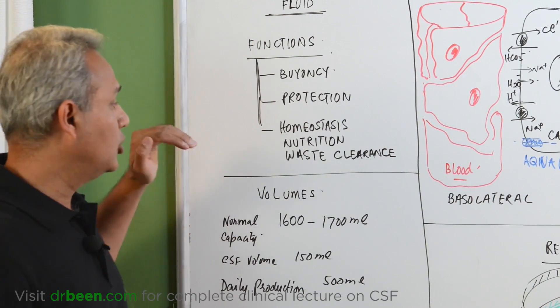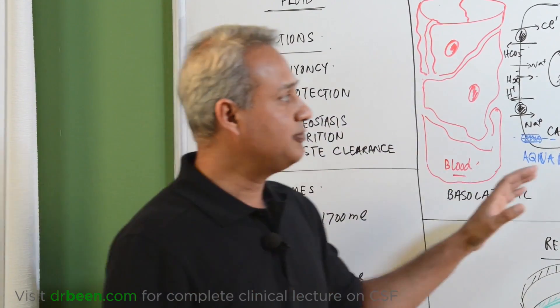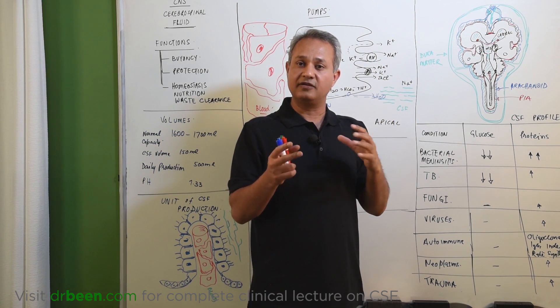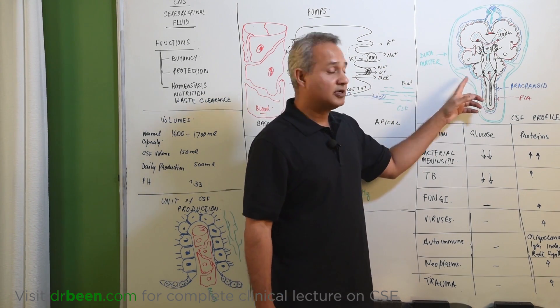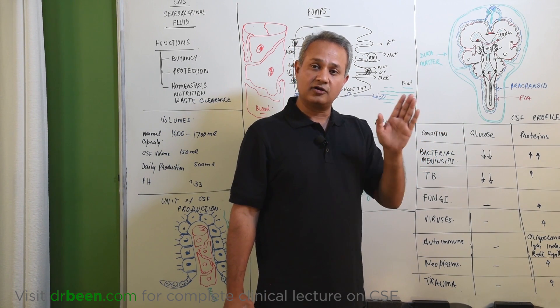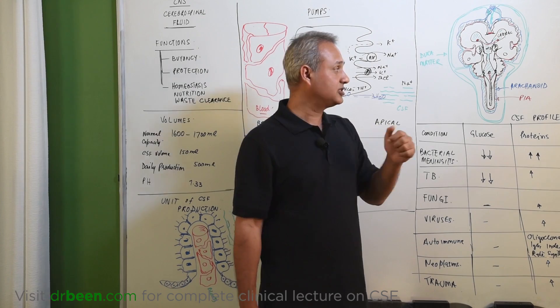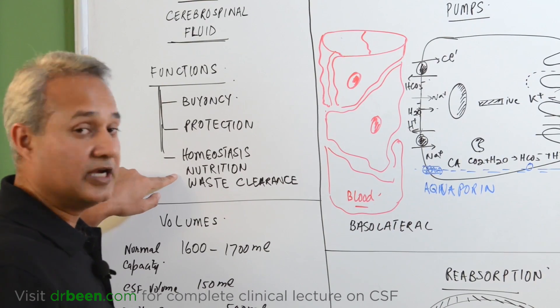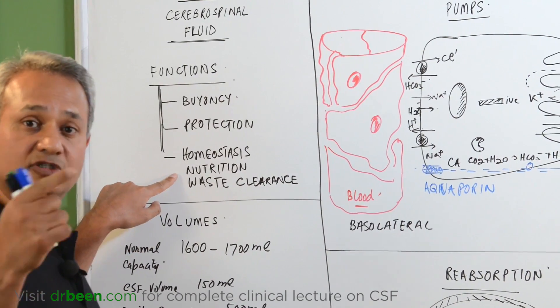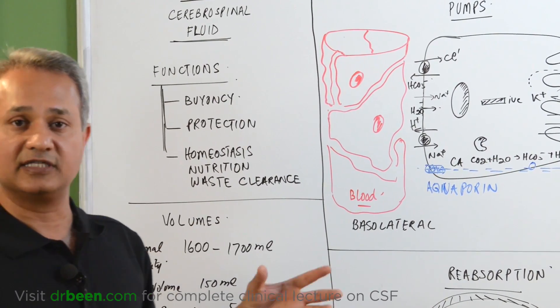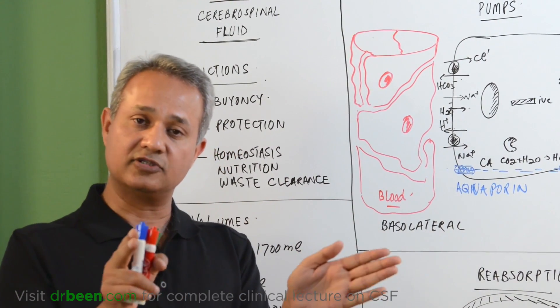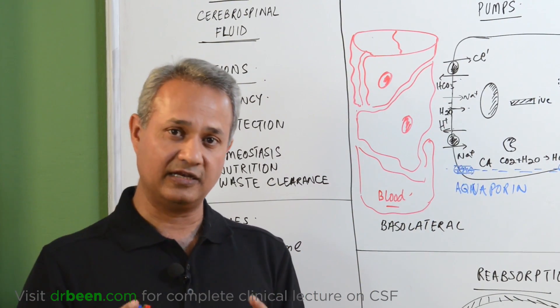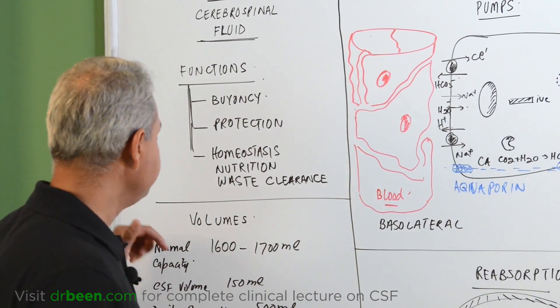Then is homeostasis, nutrition and waste clearance. CSF is very tightly controlled. This is the environment for the brain in which the brain lives. That environment is very different from the blood environment. The composition of the CSF is very tightly managed. The function of the CSF is to create homeostasis for the brain, then to provide nutrition. All the nutrition going to the brain passes through the CSF and then to the brain. And finally, the waste products that are produced by the brain's function move back into the CSF and from there to the blood. This is the primary environment for the brain to live in. The brain does not live in the blood environment, it lives in the CSF environment.